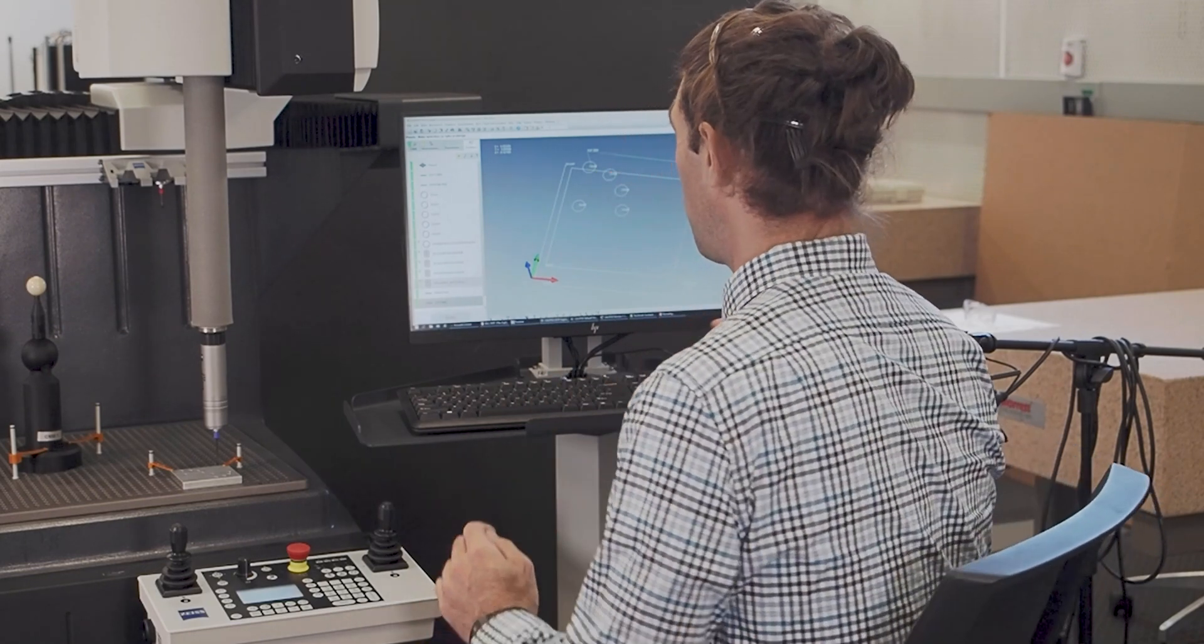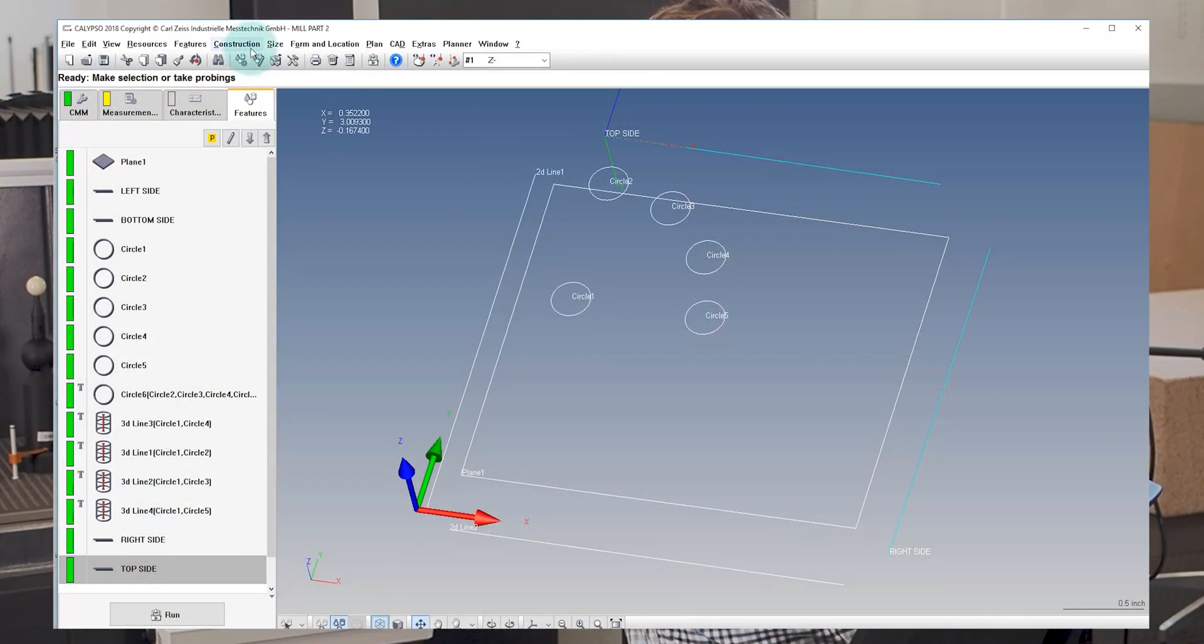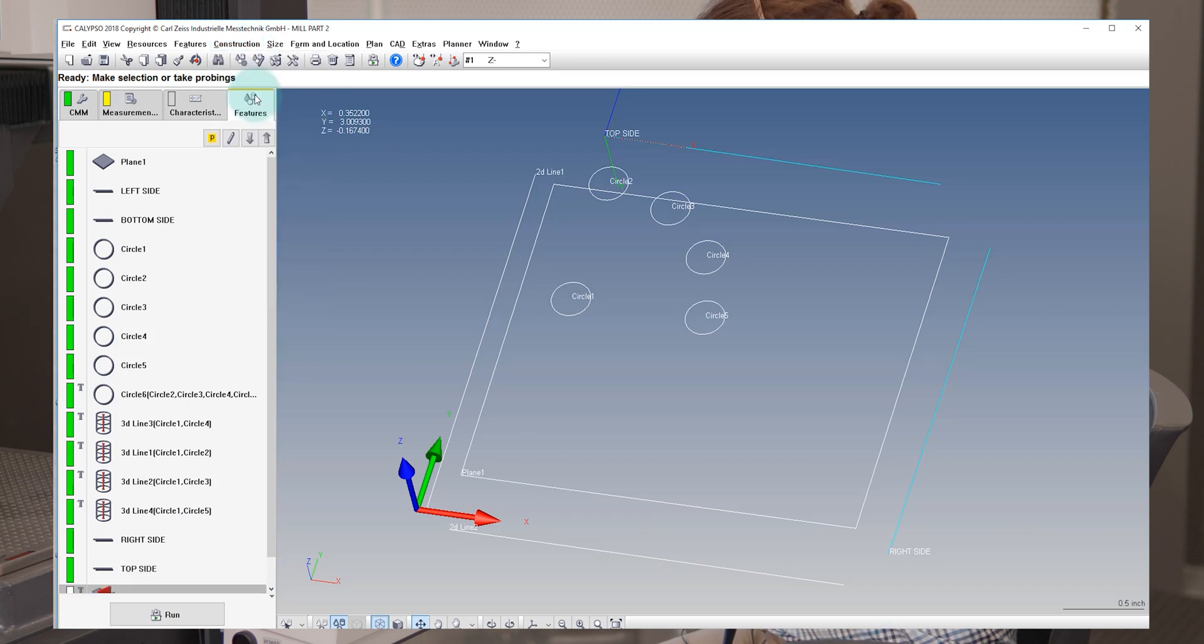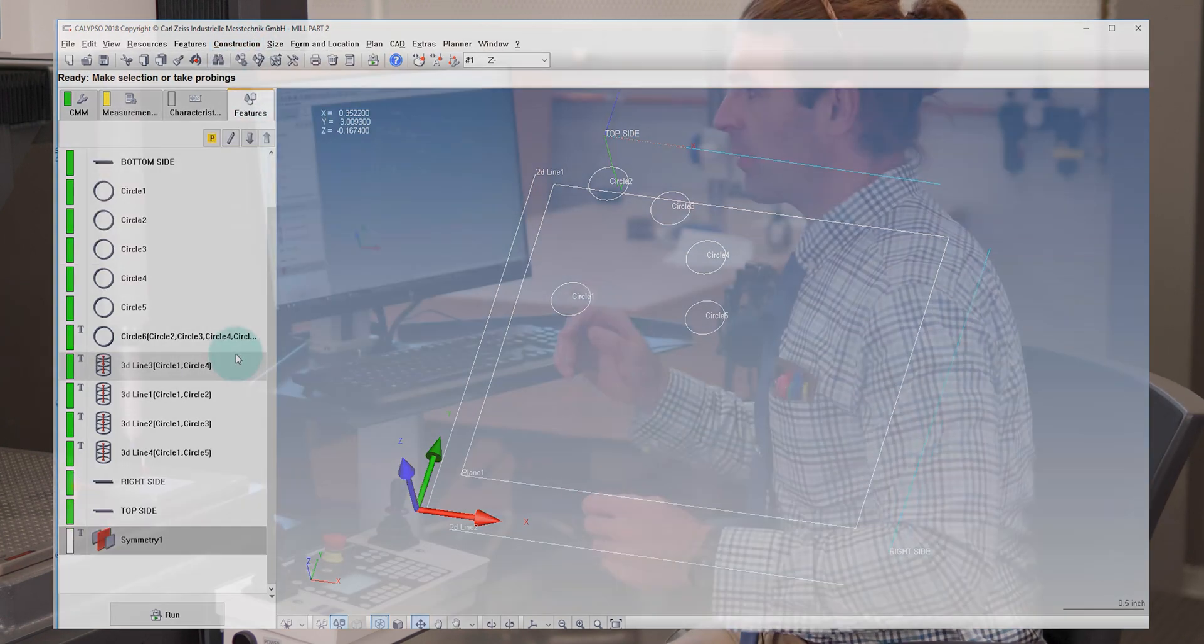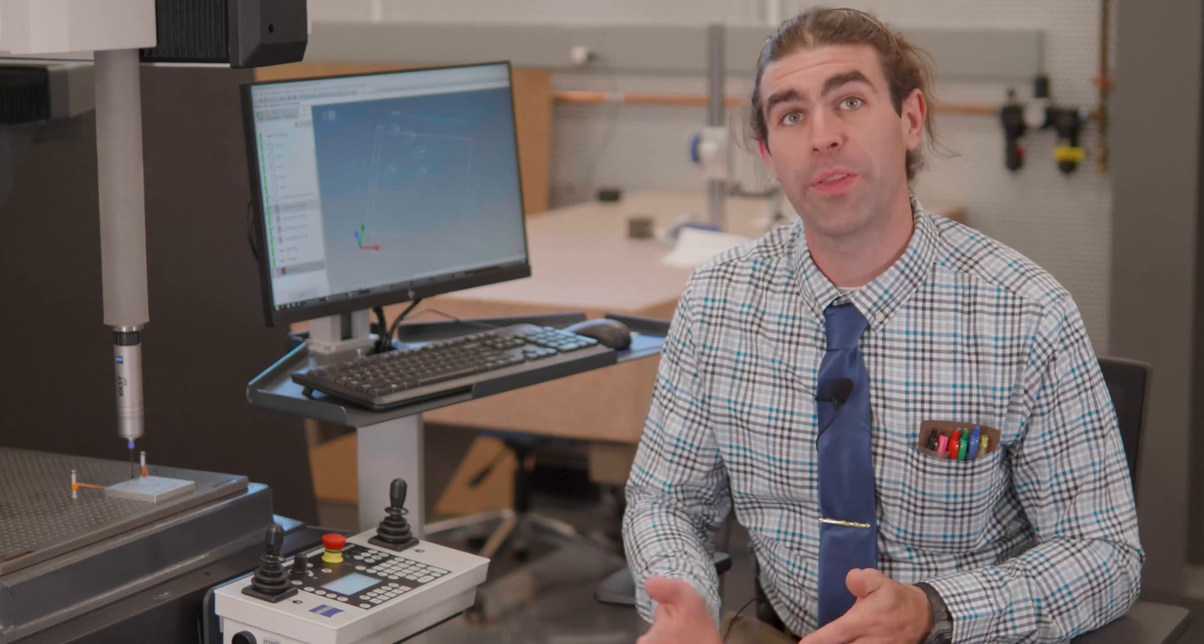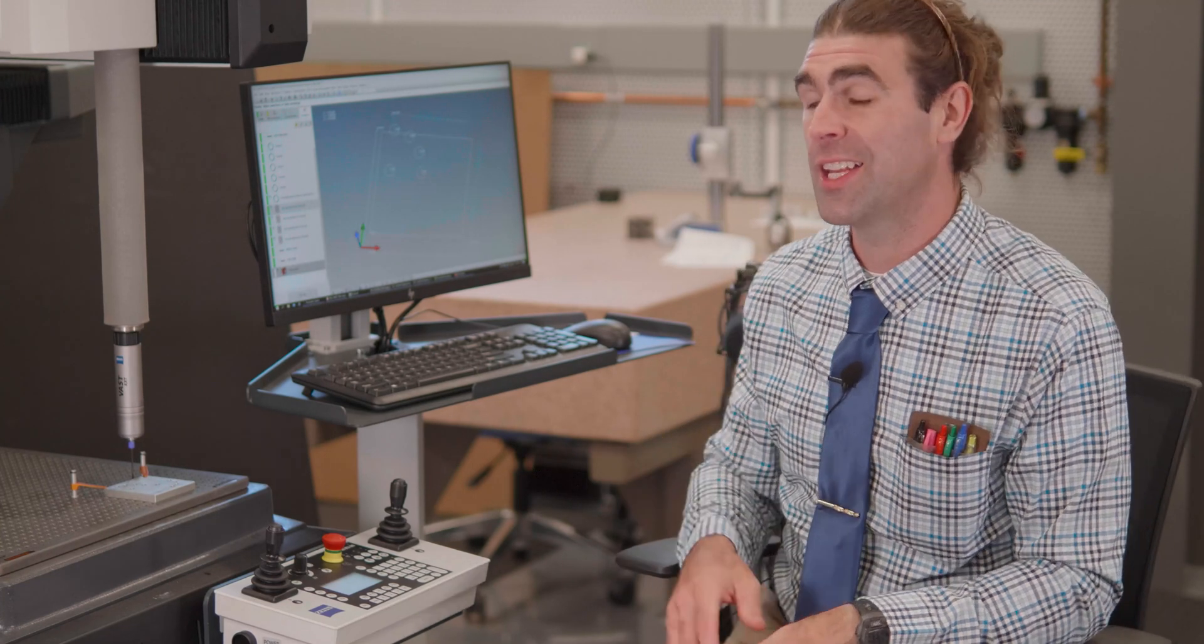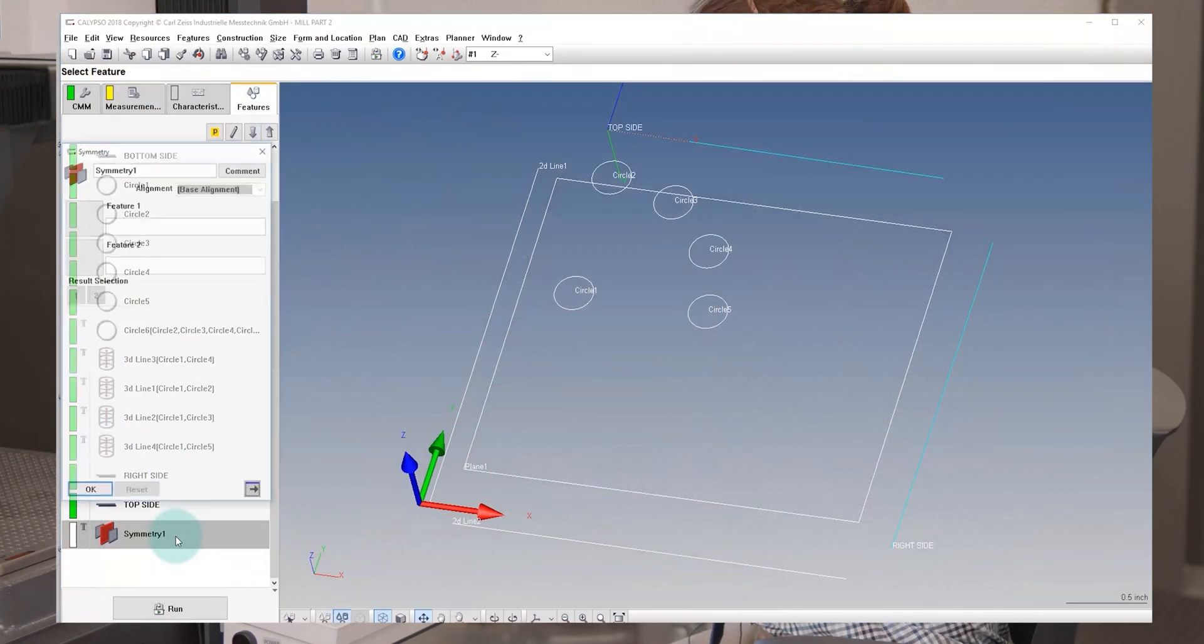Now I'm going to go to the construction tab and create those symmetry features. So we'll go to construction tab. Symmetry is going to be our third one down. And just like when we did the bolt hole circle in the previous video, we're going to create the feature and then we're going to populate it with the information it needs. So I'll double click on symmetry.